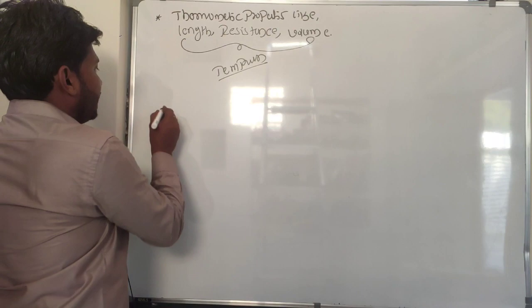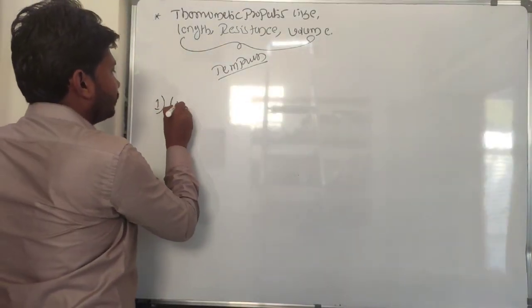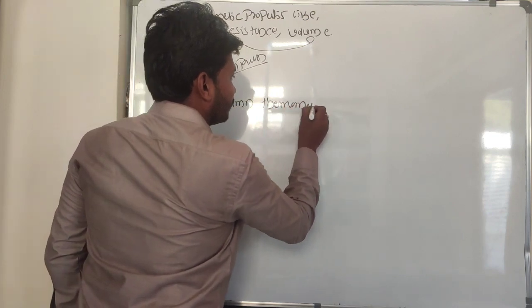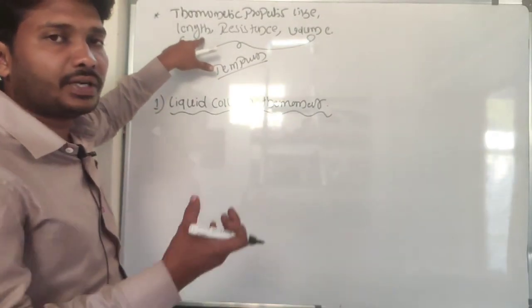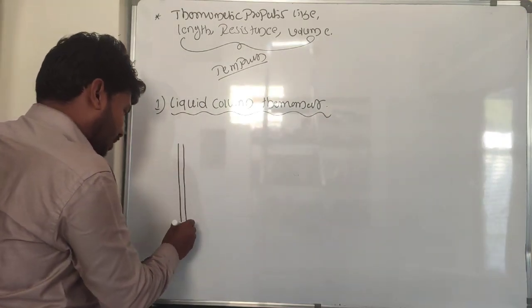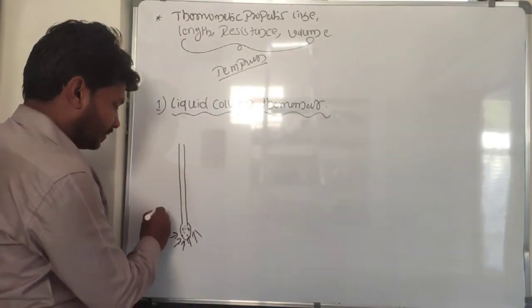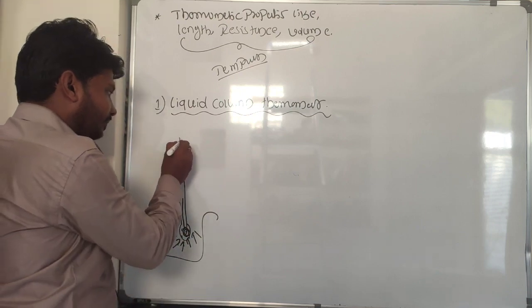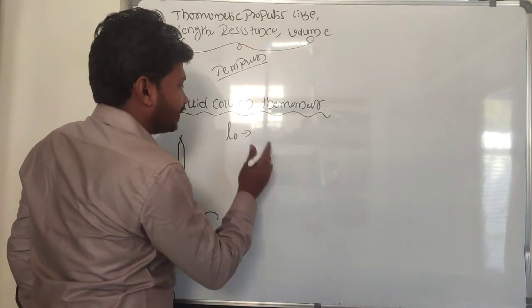First, let's consider the liquid column thermometer. In a liquid column thermometer, the thermometric property is the length of the liquid, which is directly proportional to temperature. We take a narrow tube with mercury at the bottom. When this thermometer is placed in a hot water bath, it absorbs heat and the mercury rises upward. Initially, we consider the length of the liquid column at 0°C as L₀.